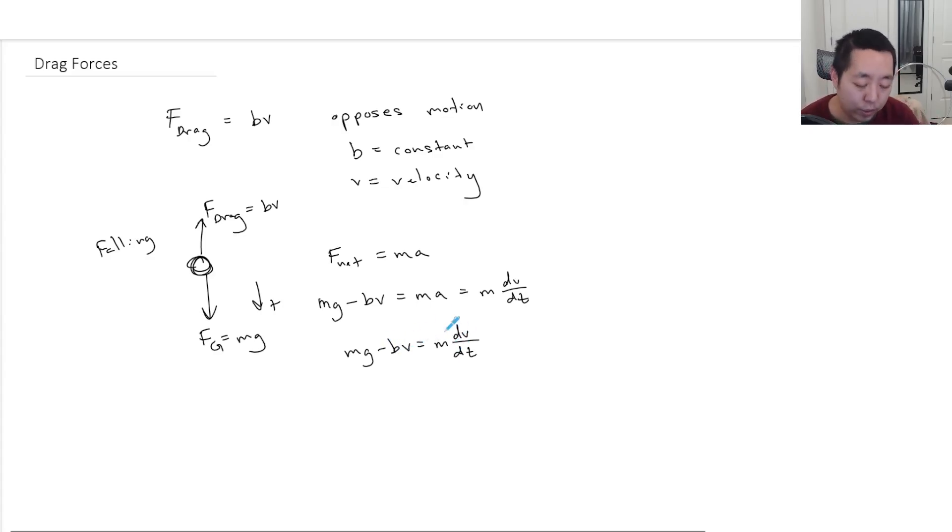G is a constant, assuming it's near the surface of the earth. B is a constant, that was kind of given. And so the only variable is V, and you're trying to figure out what V relates to it. Now, depending on where you are in calculus AB, we set up to solve this differential equation, because this is a separable differential equation. What we do is we move the DT up.